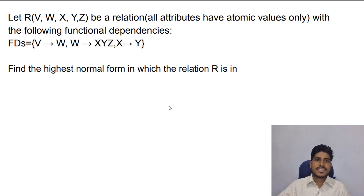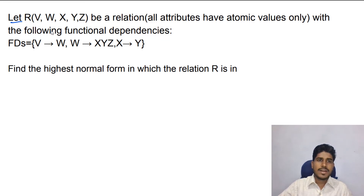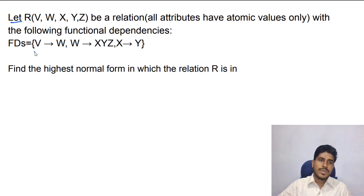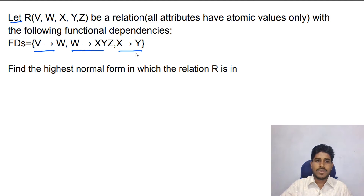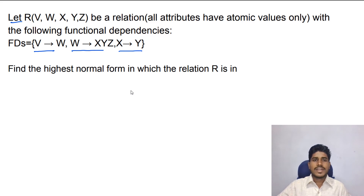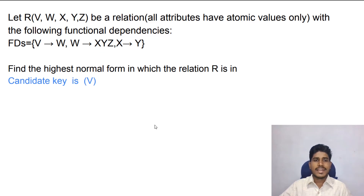Now let us see another example. Let R(B, W, X, Y, Z) be a relation with the following functional dependencies: B determines W; W determines X, Y, Z; and X determines Y. Find the highest normal form in which the relation R is in. First we have to find the candidate key. In this relation, the candidate key is B.